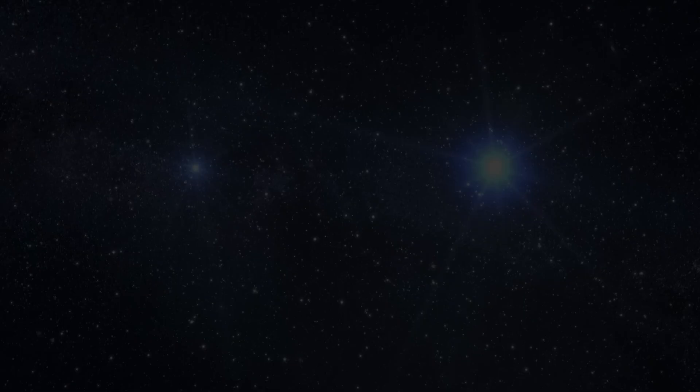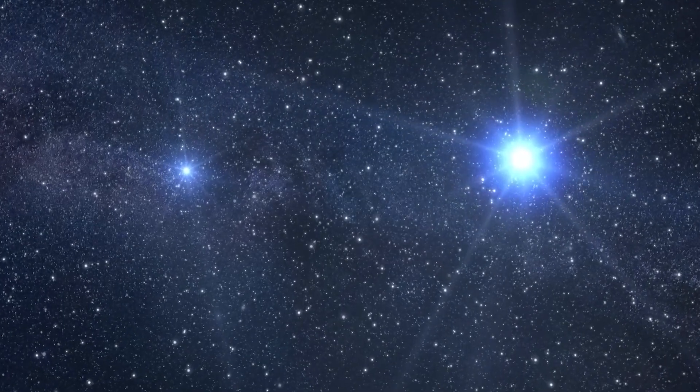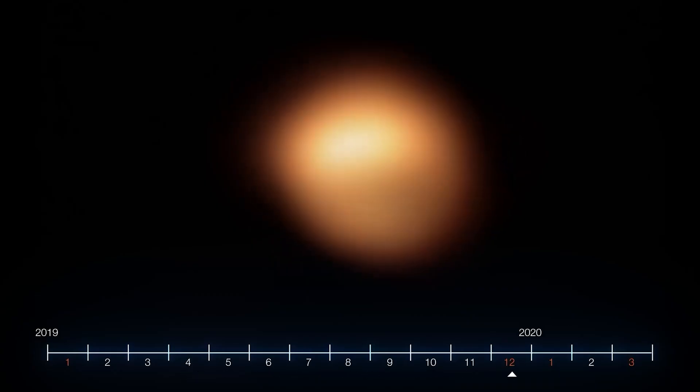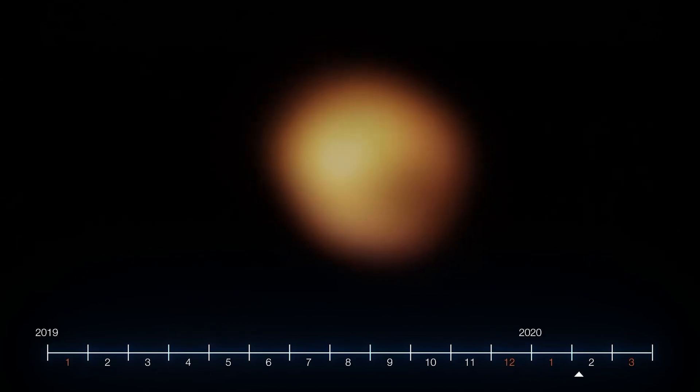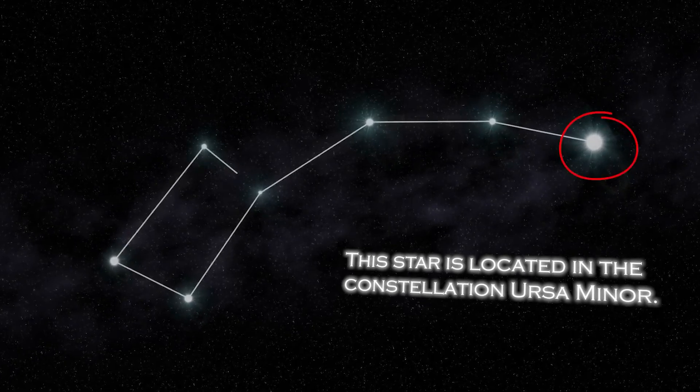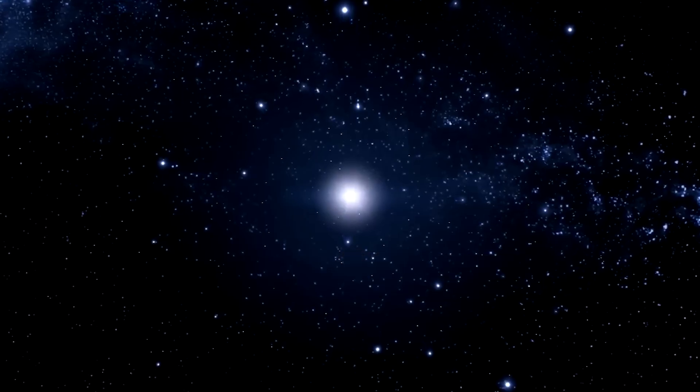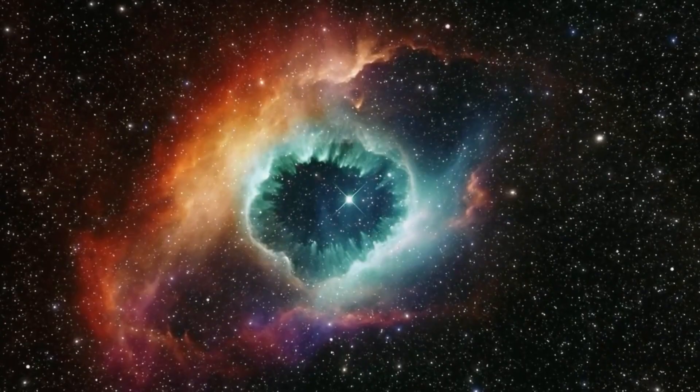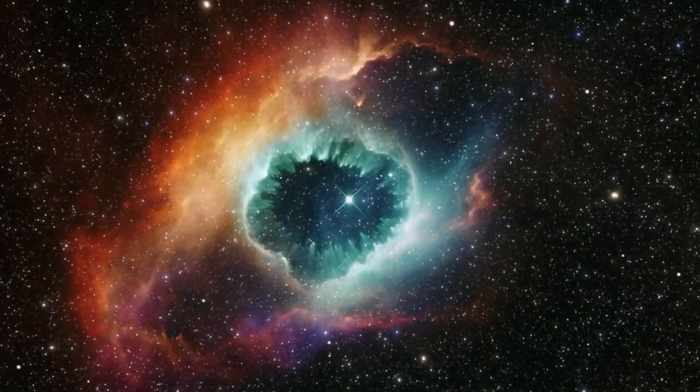Polaris, also known as the North Star, occupies a special position in the sky because of its proximity to the celestial North Pole. It is almost directly over the Earth's North Pole, which gives the illusion that it remains static in the northern sky. The star is located in the constellation Ursa Minor. Polaris is a star of moderate brightness that stands out as a yellow-white supergiant of considerable dimension compared to our Sun.